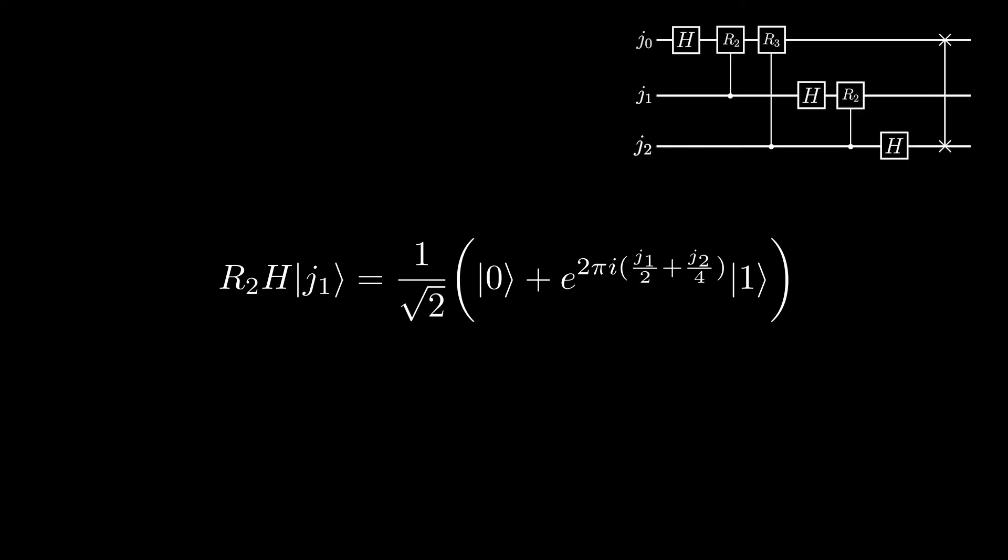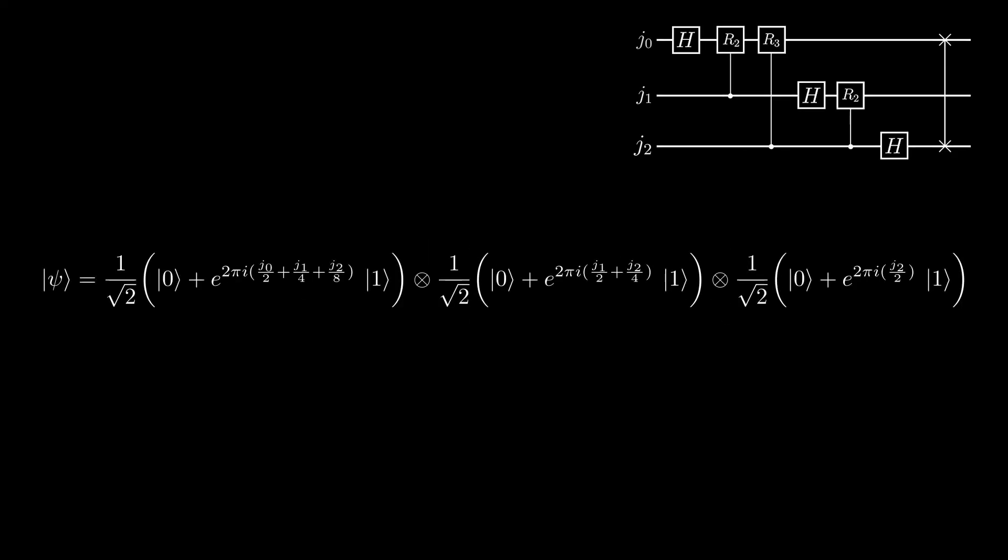Lastly, we apply a Hadamard gate to the j2 qubit, leaving it in this state. So after this part of the algorithm, our state j is in this state. Now, once we swap the qubits, the state changes to this, and we're done with the algorithm.